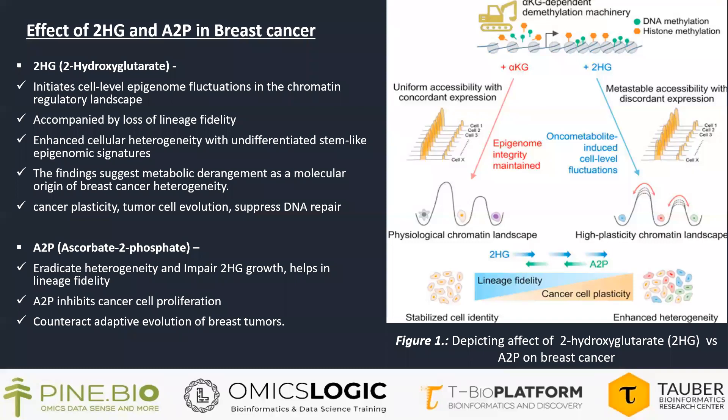My research primarily concerns the effect of 2HG and A2P in breast cancer. 2HG, which is 2-hydroxyglutarate, initiates cell-level epigenome fluctuation in the chromatin regulatory landscape, accompanied by loss of lineage fidelity. It also enhances cellular heterogeneity with undifferentiated stem-like epigenomic signatures. The findings suggest metabolic derangement as a molecular origin of breast cancer heterogeneity. It also enhances cancer plasticity, tumor cell evolution, and suppresses DNA repair.